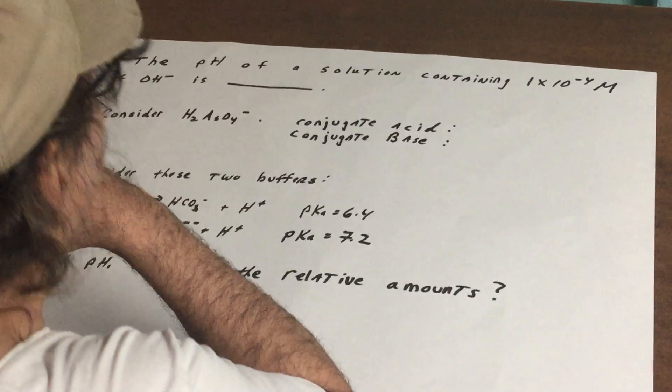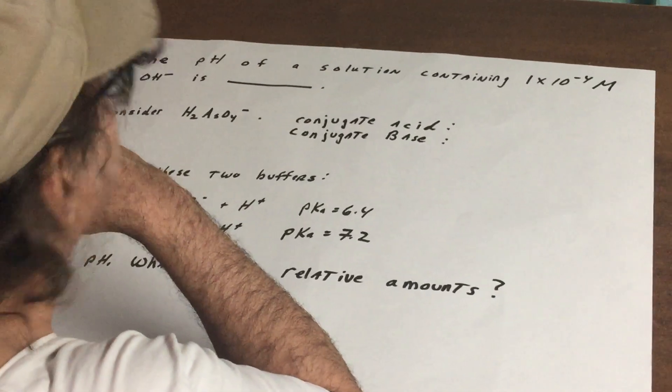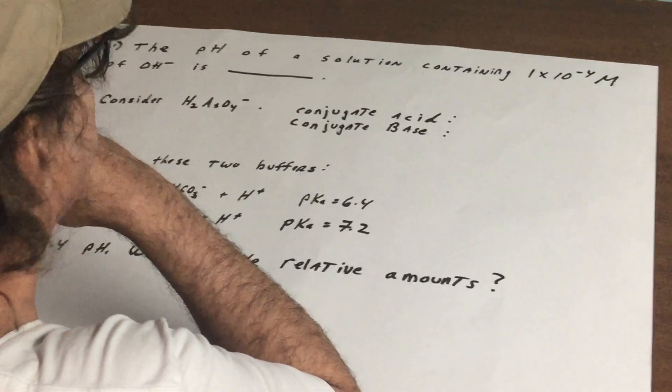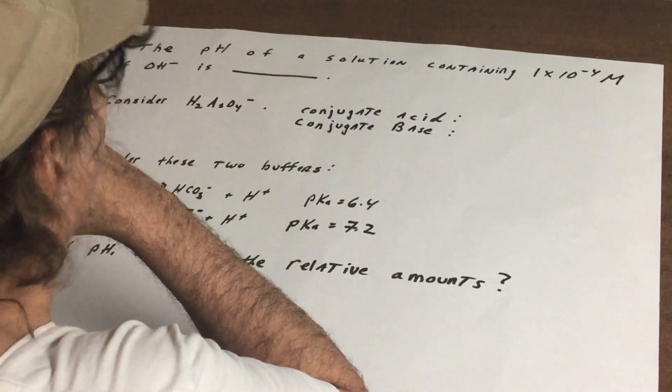Problem one, it says the pH of a solution containing 1×10^-4 molar of OH- ions is blank. This is a sure bet type of question.